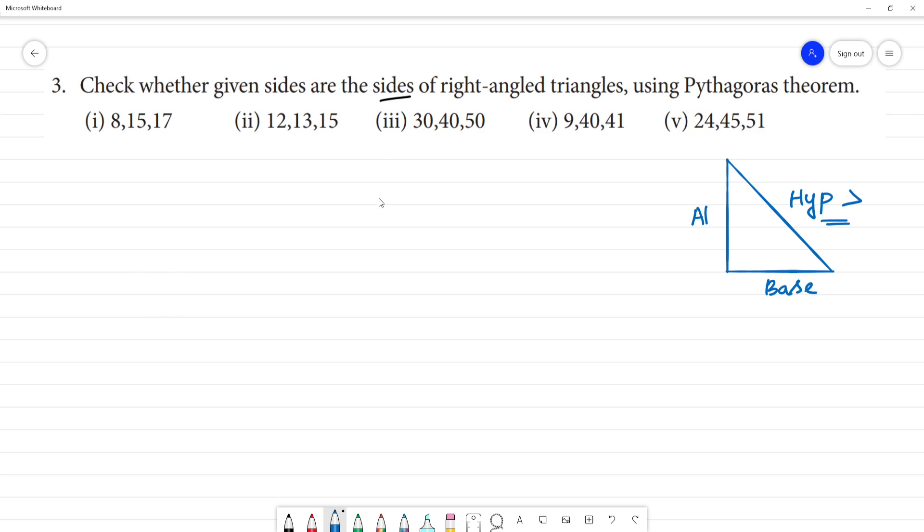What is Pythagoras theorem? Hypotenuse square will be equal to the leg square, that is altitude square plus the base square.